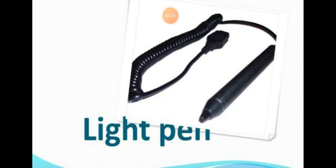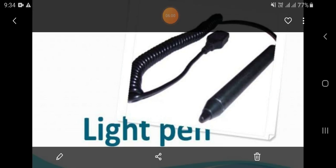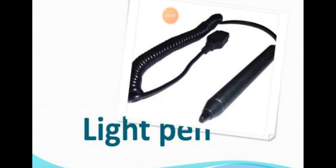Light pen is an input device which is used to draw lines or figures on a computer screen. It is used with cathode ray tube screens where it can detect precision on the screen as it passes. Ye ek pointing device hai jo text ya data ko select ya modify karne ke liye istemaal kiya jata hai. Khas taur par iska istemaal cathode ray tube monitor par data highlighting ke liye kiya jata hai. Uses of light pen: graphic designing mein draw line of figure mein use kiya jata hai, aur computer ke screen mein painting karne ke liye bhi light pen ka use karte hai.